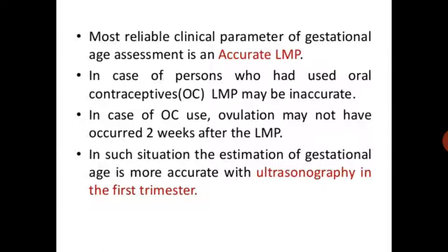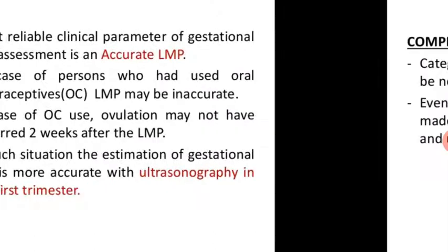In the case of a person who has used oral contraceptives, the LMP may be inaccurate. Ovulation may not have occurred accurately two weeks after the LMP. In such situations, the estimation of gestational age is more accurate with ultrasonography in the first trimester.